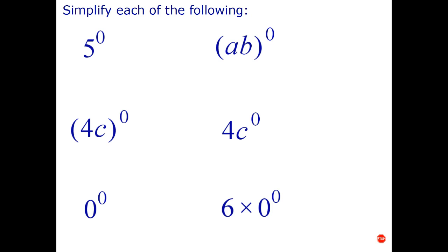So anything to the 0 power is 1. So 5 to the 0 equals 1. AB in brackets to the 0 or anything no matter how complicated raised to the power of 0 equals 1. Let me try this one over here.